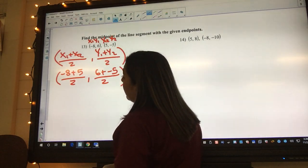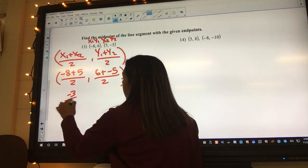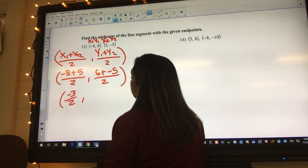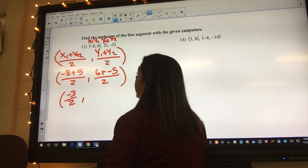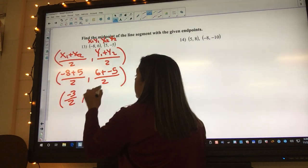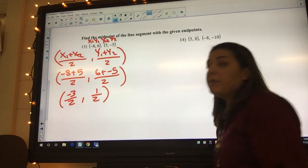Well, negative 8 plus 5 is going to be negative 3 over 2, and then 6 plus negative 5 is going to be 1 over 2. And so we've found our midpoint.